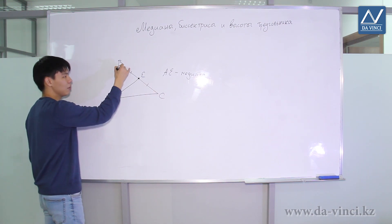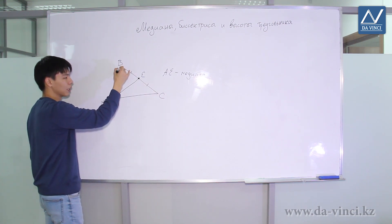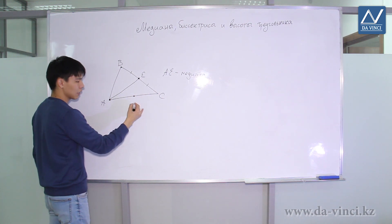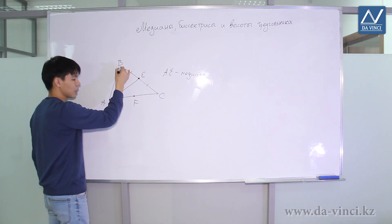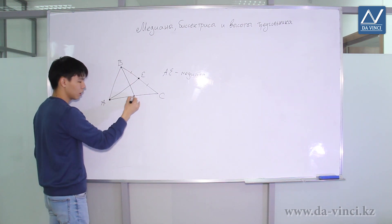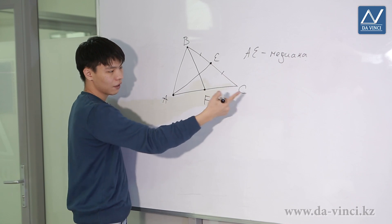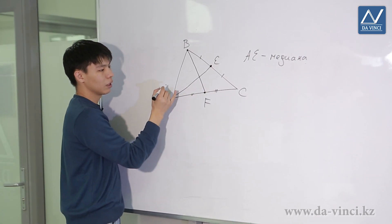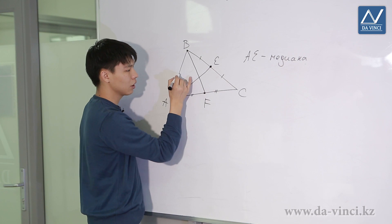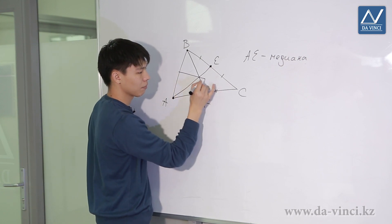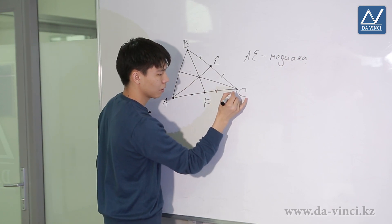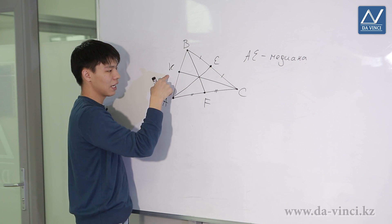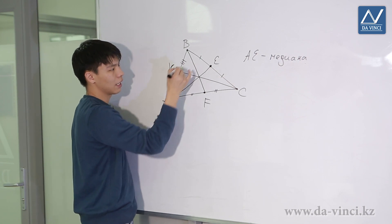I can draw a median from point B in the same way. To do this, I mark the middle of segment AC — let's say point F — and connect. That is, AF equals FC. I will mark it with two dashes. And in the same way, I can draw a median from point C. Let's say we have point K here, and segment BK is equal to segment AK.